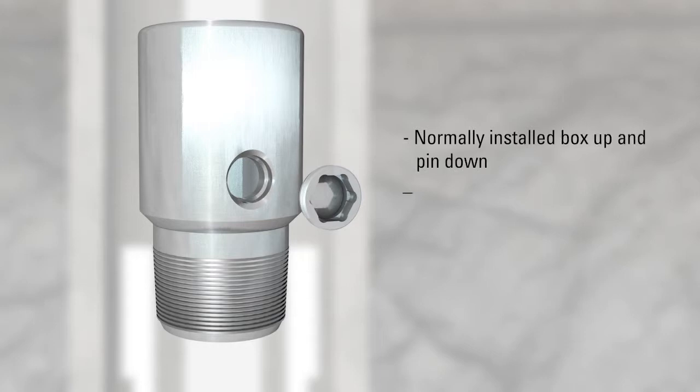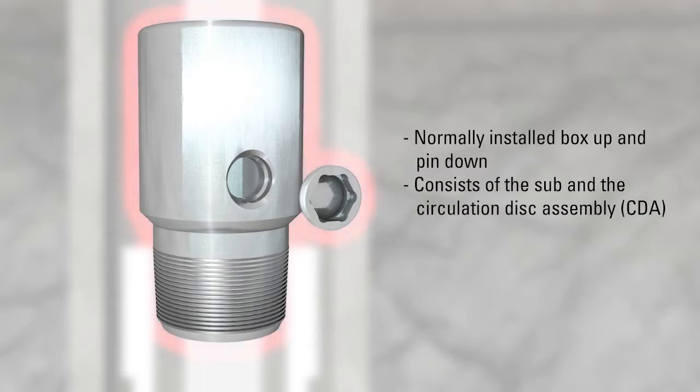Normally installed box up and pinned down at the desired depth in the tubing string, the HTD consists of the sub and the circulation disc assembly, or CDAs.